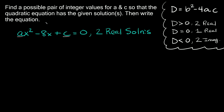Then write the equation. The equation we're given is ax squared minus 8x plus c is equal to zero, and we have to have two real solutions. To set this up and solve it we need to use the discriminant. The formula for the discriminant is b squared minus 4ac — this is just the part inside the big square root in the quadratic formula.